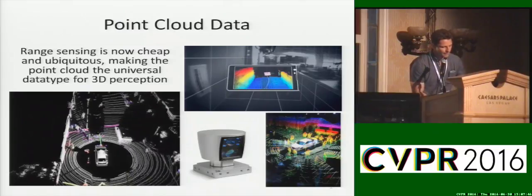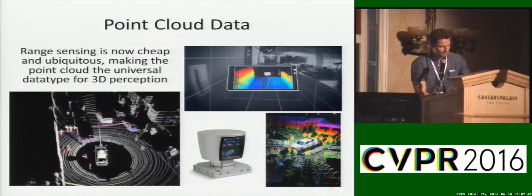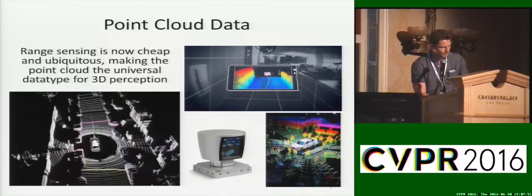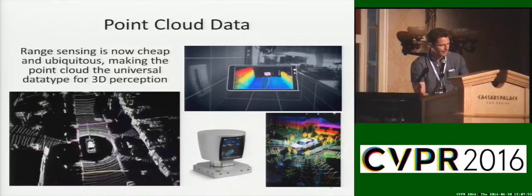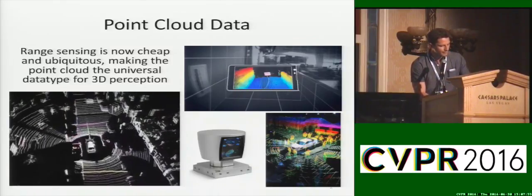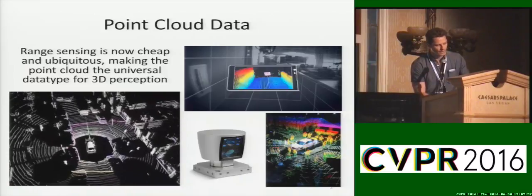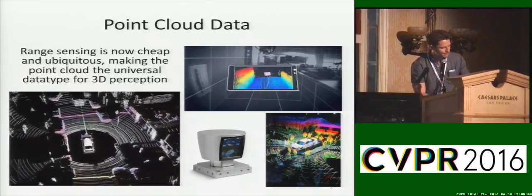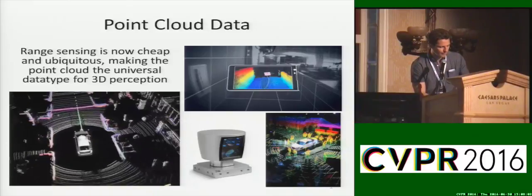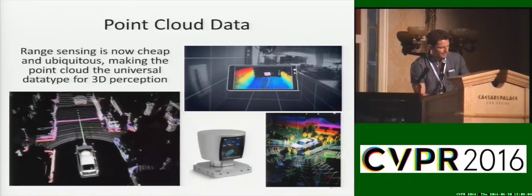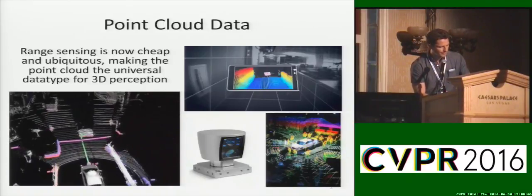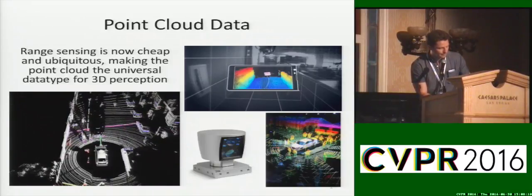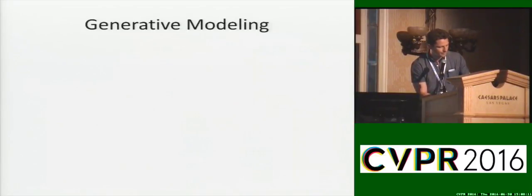Point clouds are quickly becoming the de facto data type for many applications related to 3D perception. This is in part due to the proliferation of low-cost and highly accurate 3D range sensors, as well as the rising interest in areas such as autonomous driving and augmented reality. It is therefore important to know how to best utilize point cloud data for these perception tasks, and thus explore different types of representations that may help facilitate or accelerate the common underlying operations.